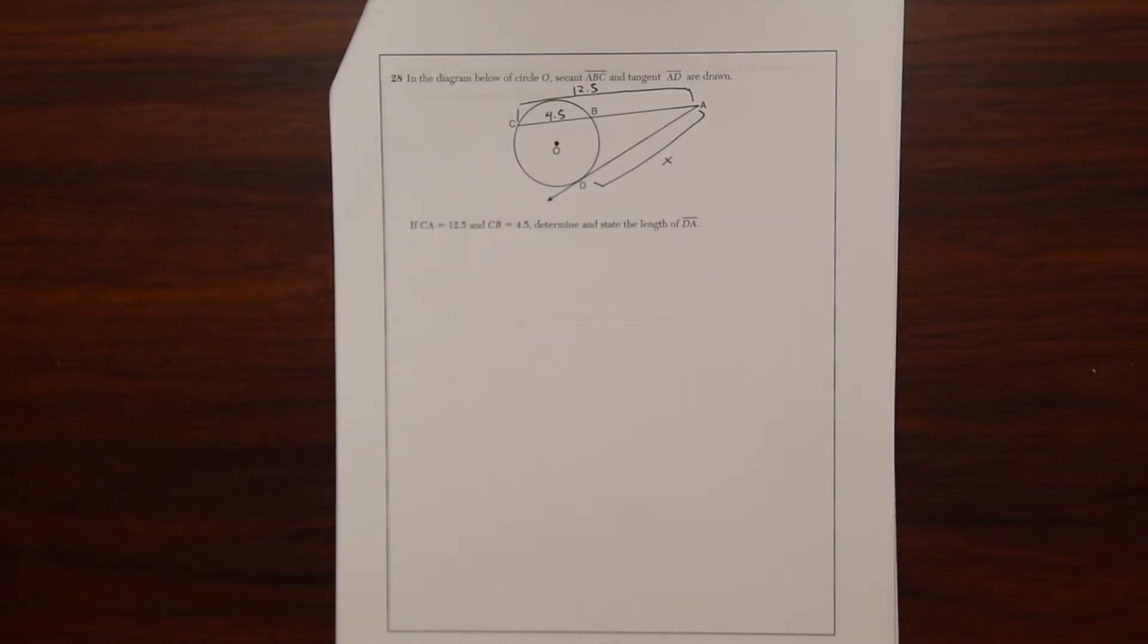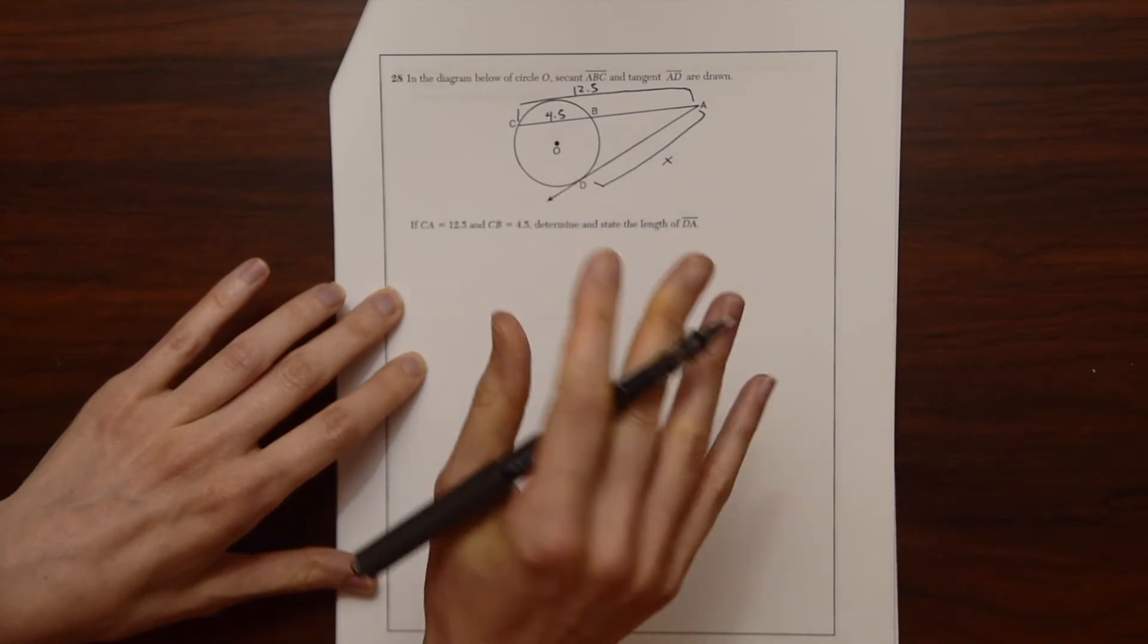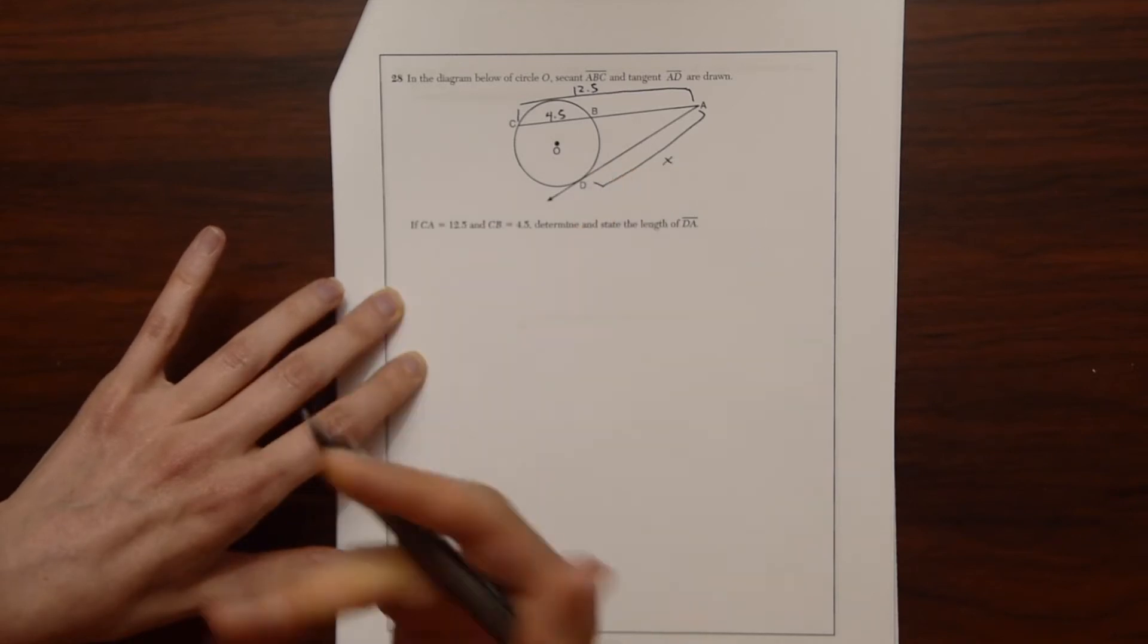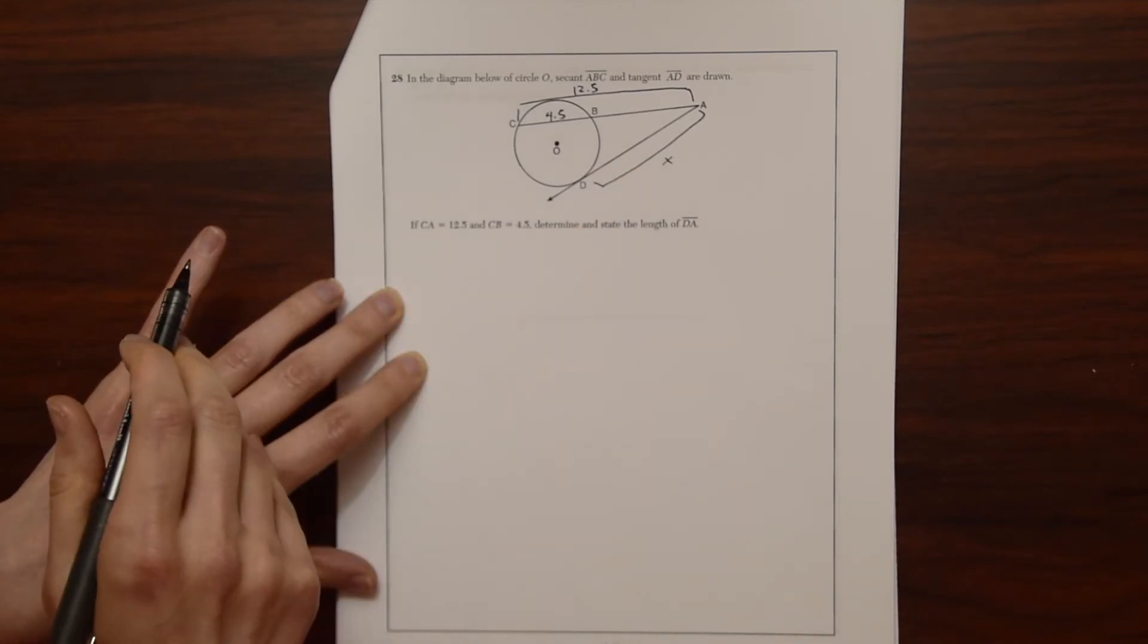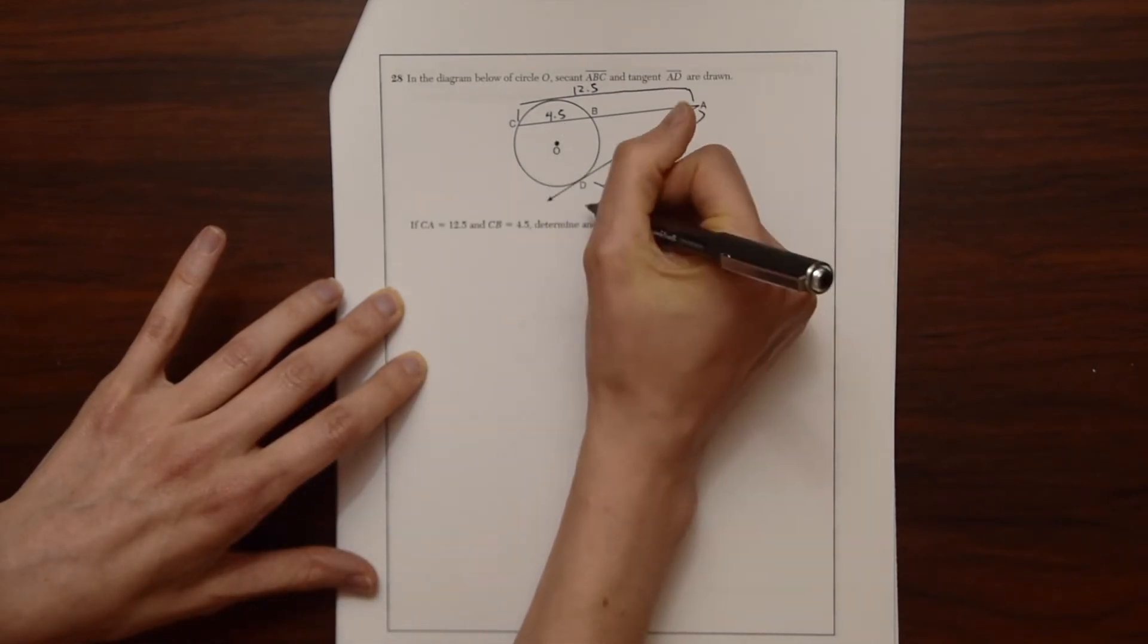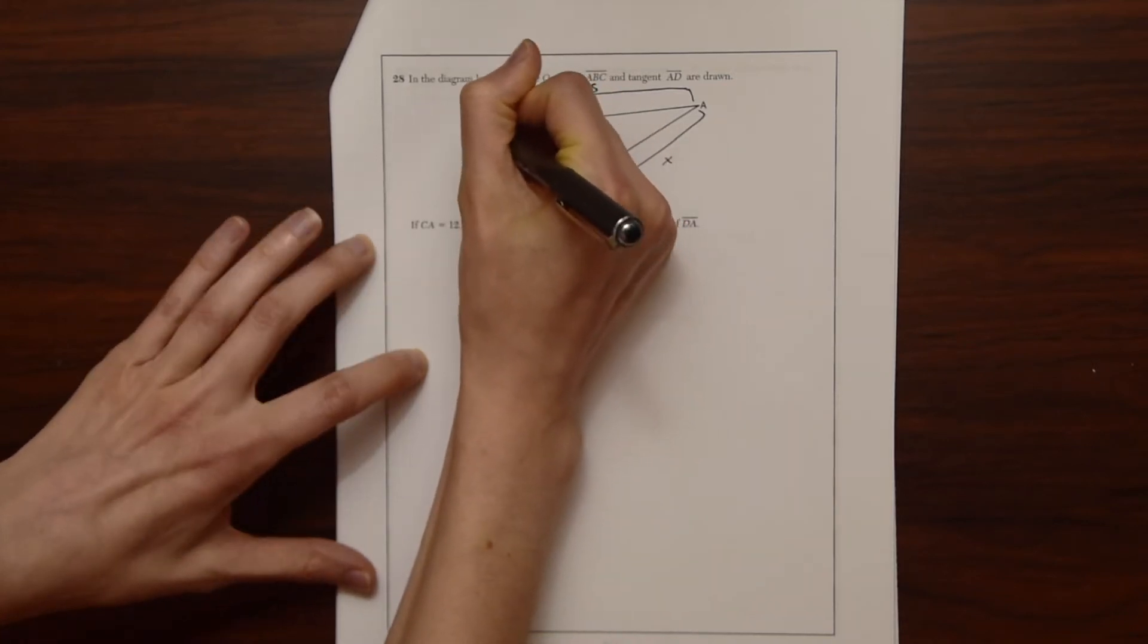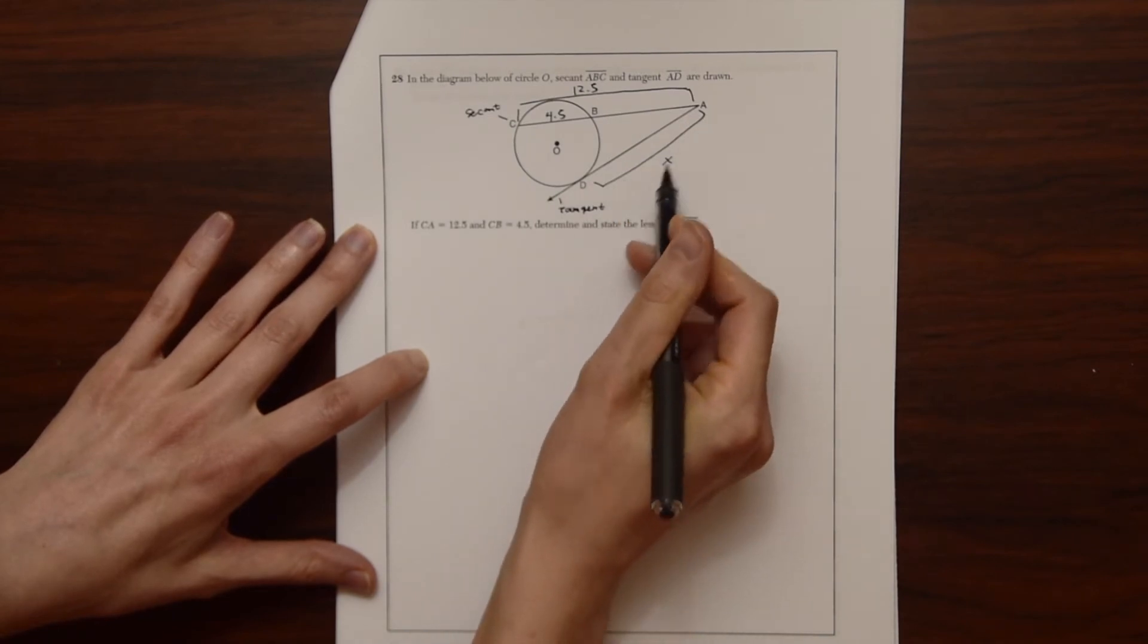So lucky for us, there is a nice property when we have a secant and a tangent to a circle with the lengths. When we have lengths like this and we need to find the value of one of them, we can use this rule. The rule is that any length of the tangent squared, so the length of the tangent squared, in that case, that's AD squared.